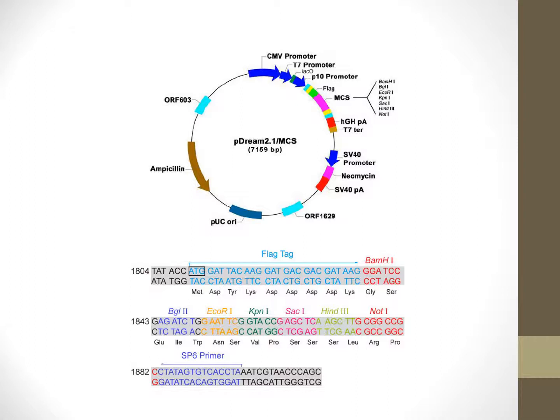In the case of plasmid vectors, a range of promoters can be utilized to drive the expression of the DNA of interest. In the case of the pDREAM vector, which is displayed in this slide, a CMV or cytomegalovirus promoter can be utilized for expression of the gene of interest in eukaryotic systems, a T7 promoter for expression in a bacterial host, and a PTAN promoter for expression in insect cell lines. This utilization of three sets of promoters facilitates expression of the gene of interest in a range of host systems.